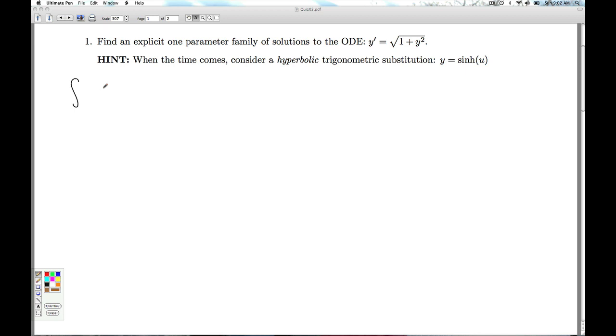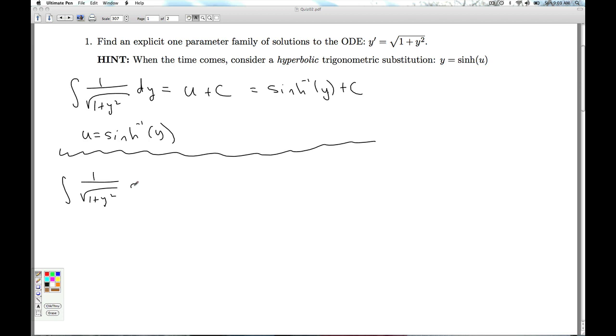So, the integral of 1 over the square root of 1 plus y squared dy is equal to u plus a constant, where u was the inverse hyperbolic sine of y. So, what does that mean in terms of the differential equation? We had the integral of this equals the integral of that.